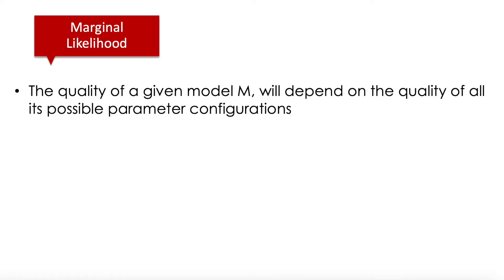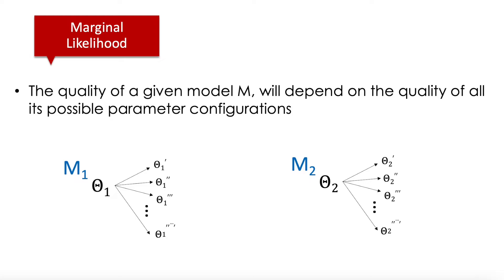The quality of one given model will depend on the quality of all the possible parameter configurations. For example, if we have M1, we're going to have a bunch of possible configurations for its parameters, and the same for model 2. The idea of the marginal likelihood is to compare both models by passing over all the possible parameter configurations.